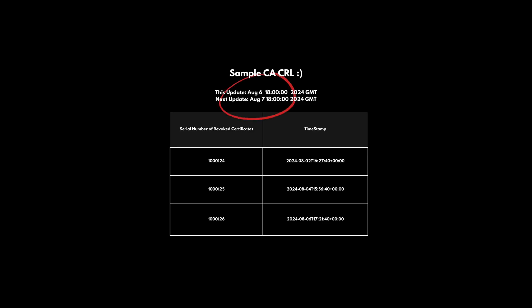The CRL file's next update field specifies its validity period, indicating when the next CRL will be issued and the current one will expire. During the TLS handshake, if no OCSP URL is provided, browsers check if a valid CRL has already been downloaded from the issuing CA. If the CRL list is expired, the browser downloads a new CRL list and then checks if the serial number of the certificate in question is on that CRL list.